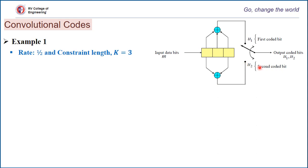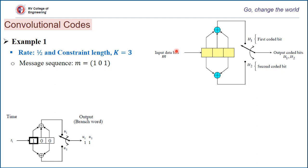We take a specific example with message sequence 1, 0, 1. At timestamp T1, the initial state of the memory register is assumed to be 0. The first incoming bit is 1. The summation of three memory elements — 1 plus 0 plus 0 — produces the first codeword U1 as 1. The summation of the first and last bits also gives 1, so the second coded bit is 1. At the first instant, with one message bit, you get two output bits, confirming rate 1/2. For input bit 1, output is 1, 1.